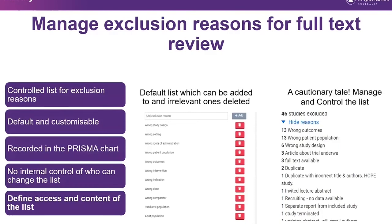A default list of full text exclusion reasons is provided and can be tailored for your review. These are automatically recorded in the PRISMA chart within Covidence. It's very important to have consistency in this list — since this section can't be locked down, it's recommended that either one person manages adding and deleting exclusion reasons, or the group sets it up at the start and doesn't change it without consensus. Exclusion reasons can also be added during the full text screening process.